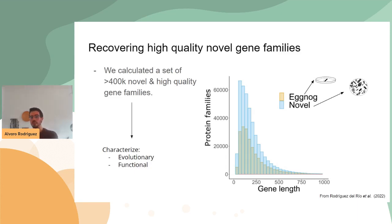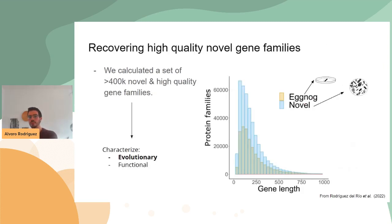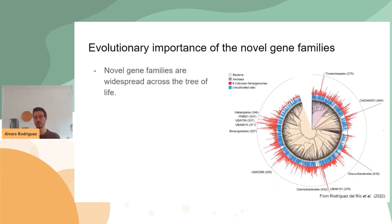We characterized these gene families from an evolutionary point of view. This figure shows how the novel gene families distribute across the prokaryotic tree of life. Red lines indicate the number of novel gene families per genome in different prokaryotic lineages. As you can see, the novel gene families are widely distributed across the tree of life and are especially present in lineages that we are not able to cultivate. What was really striking was to see that some particular lineages were highly enriched in these novel gene families — these seem to be hubs for genetic novelty.